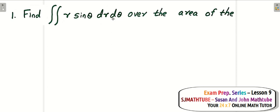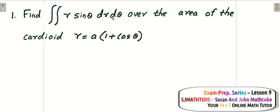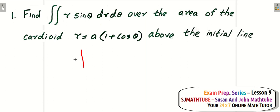That gives a clear idea that this integral is in terms of the polar coordinate variables. We evaluate this integral over the area where r equals a times 1 plus cos theta, above the initial line. In the Cartesian system we have the x and y axes meeting at the origin, and every point is called (x, y). Similarly, in the polar coordinate system, we take one point called the pole and one line called the initial line, and every point is associated with the distance from the pole and the angle the radius vector makes with the initial line.